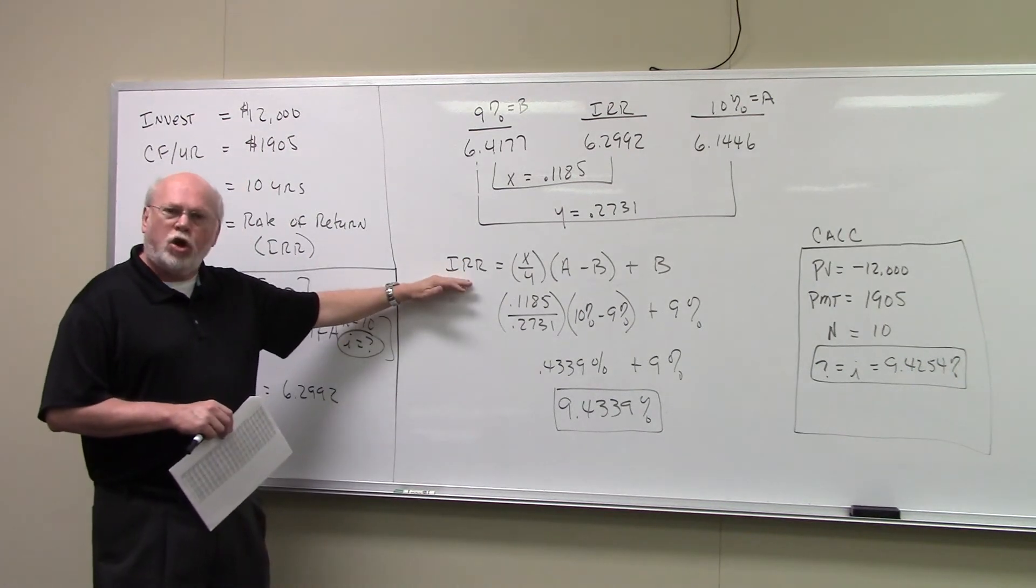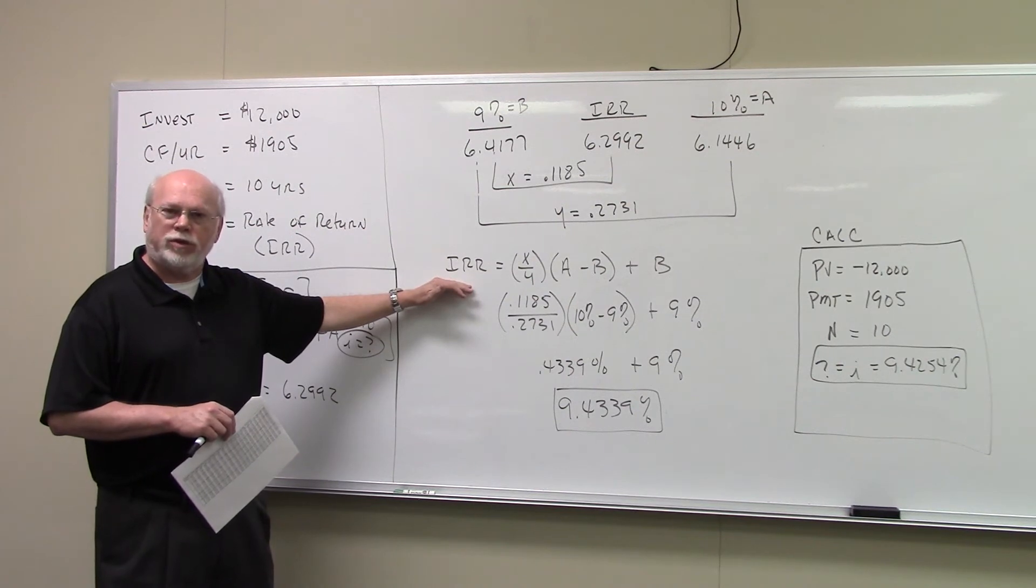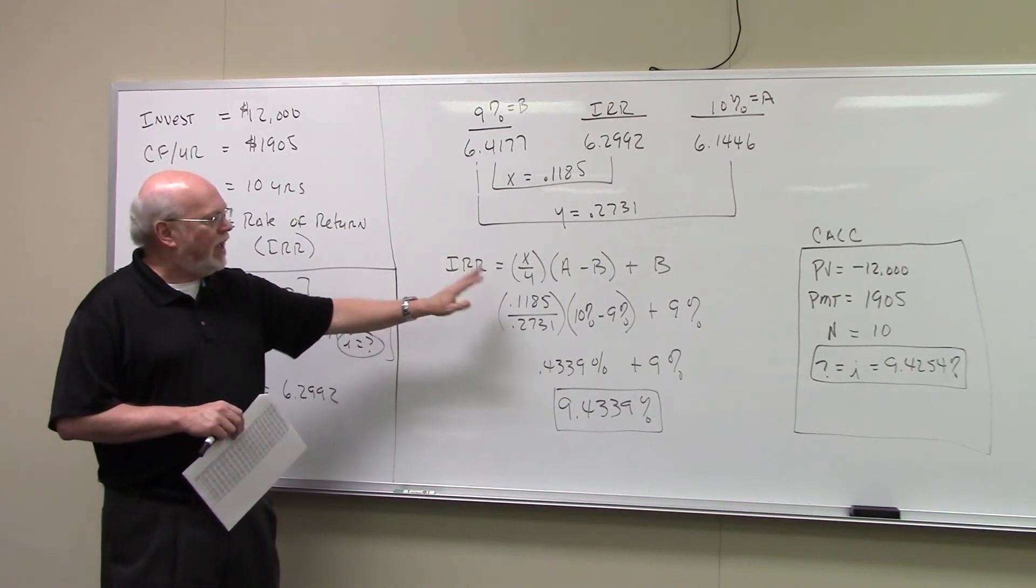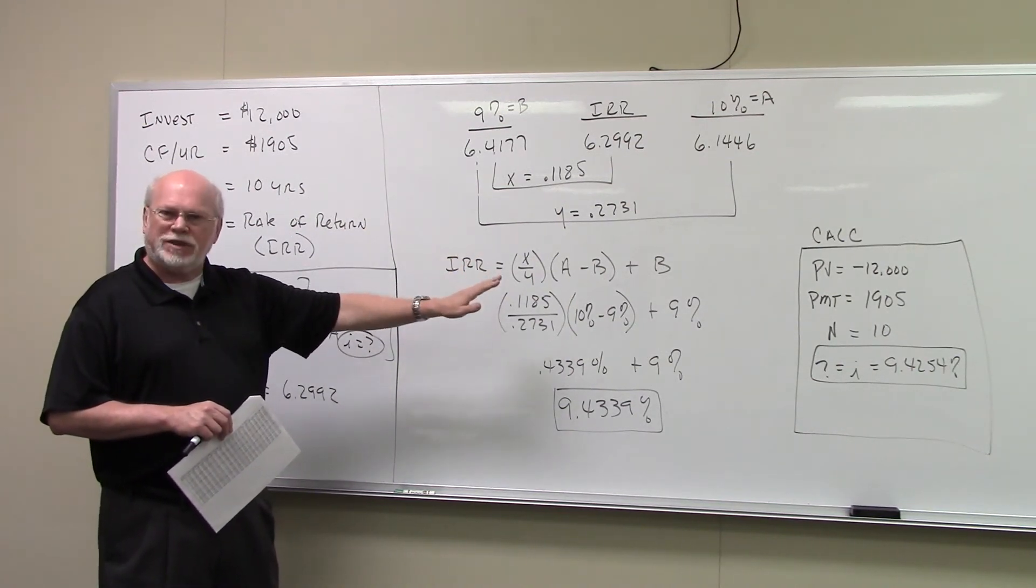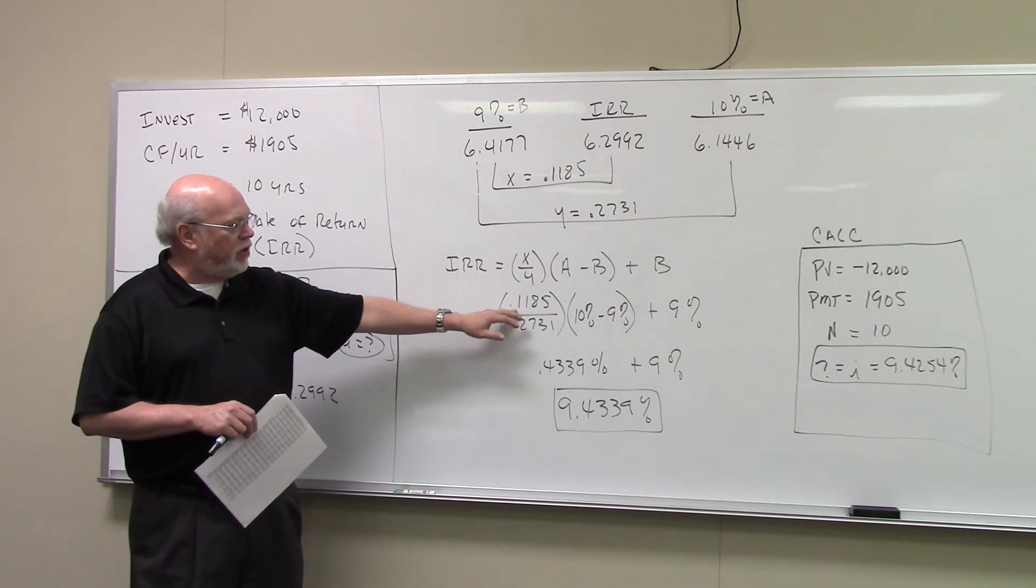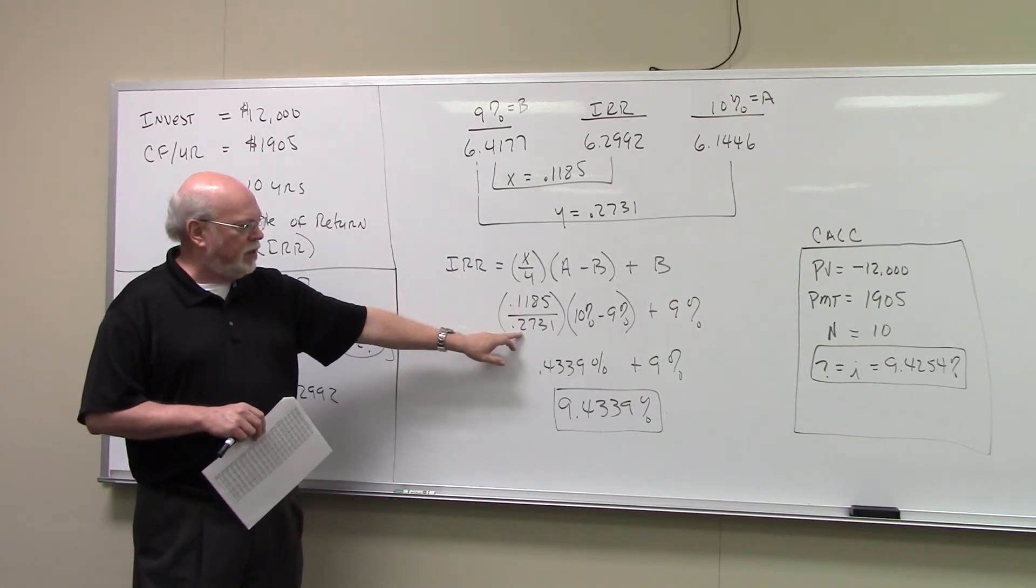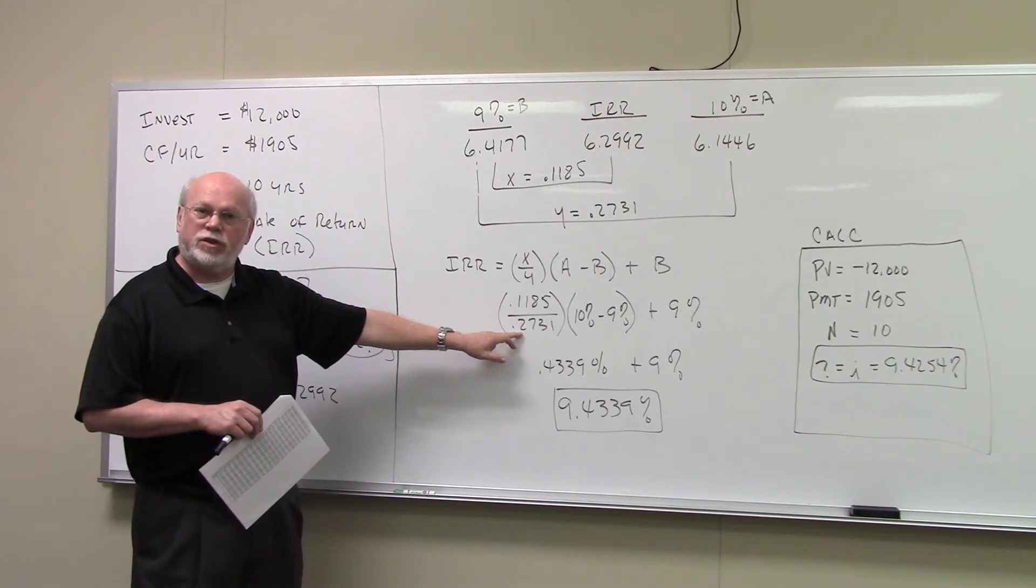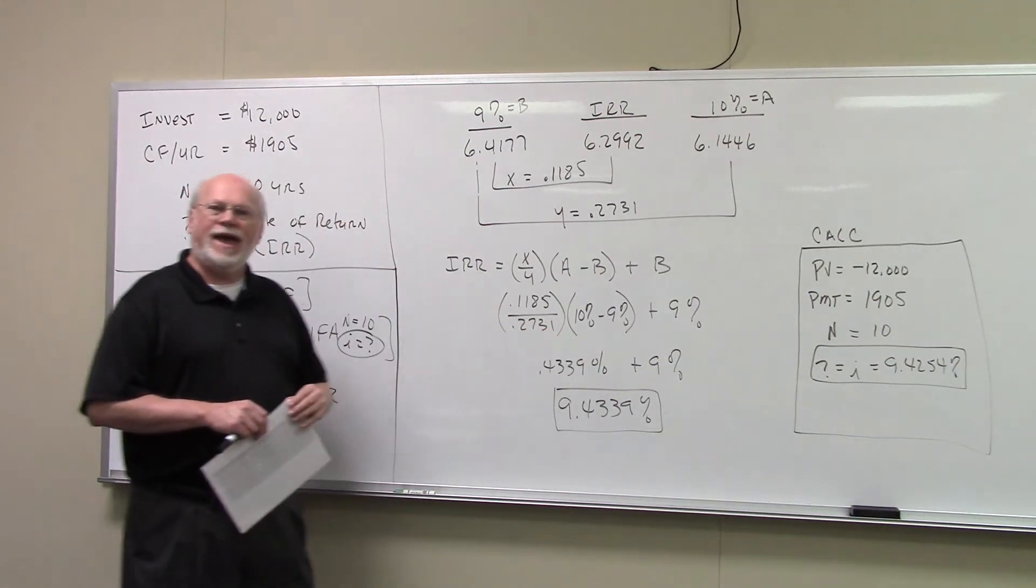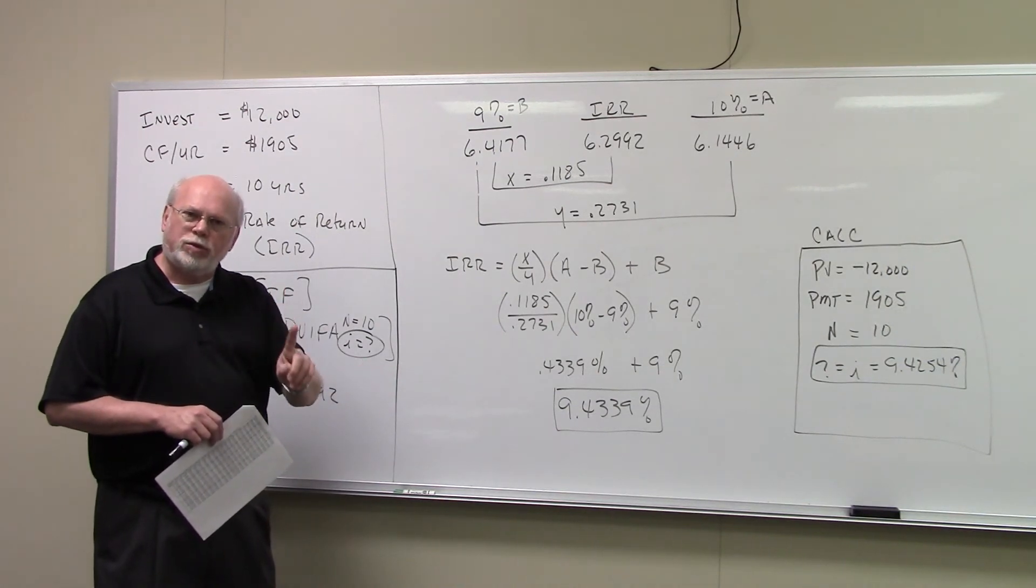When you interpolate whatever it is you're looking for, in this case we're looking for the internal rate of return, it's always equal to X over Y times A minus B plus B. In this case, the internal rate of return, X over Y, 0.1185. Y is 0.2731. We're going to multiply that now by A minus B. 10 percent minus 9 percent is 1 percent.